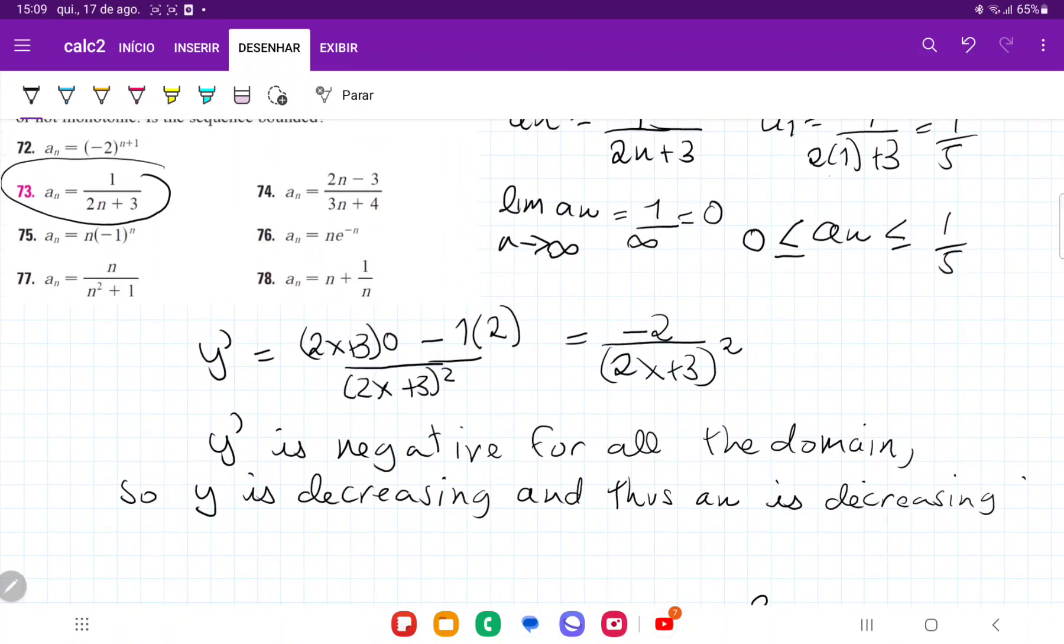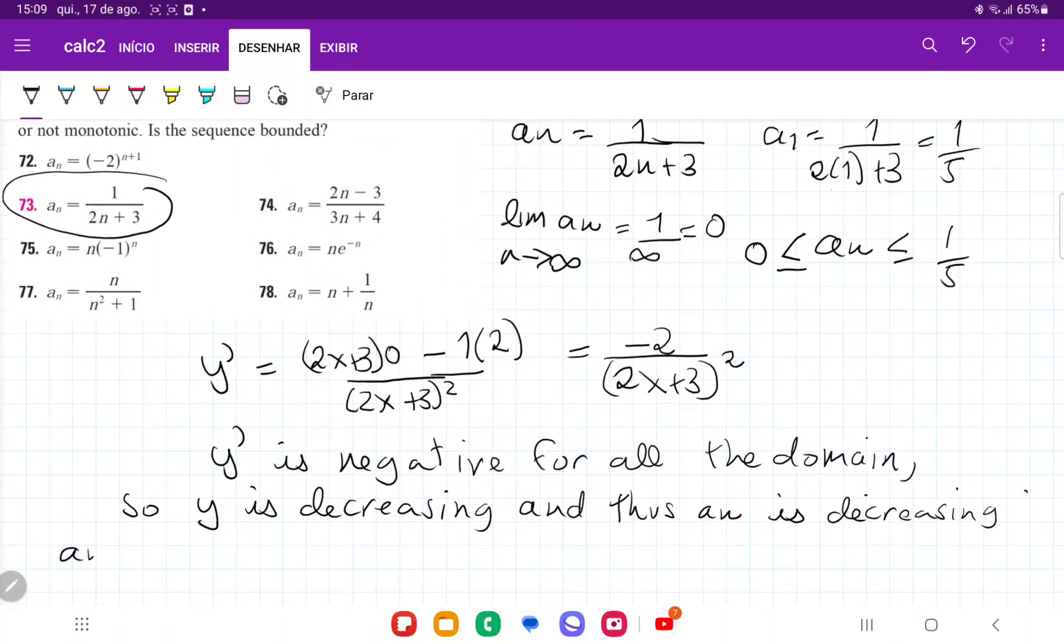And so we can say that a n is bounded because a n is less than or equal to 1 fifth, which is the first term, and is greater than or equal to 0, which is the limit as n gets very large. And so that is it for number 73. We have proved that it is always decreasing and that it is bounded between 0 and 1 fifth.